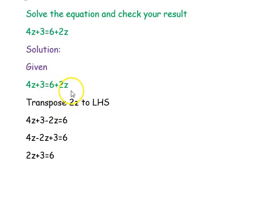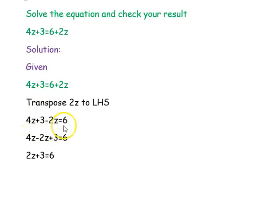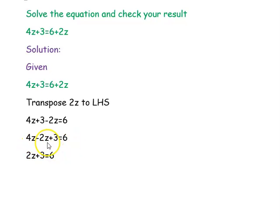The first step, we are going to transpose 2z from the right hand side to the left hand side. It will become minus 2z. So, 4z minus 2z is 2z, and 2z plus 3 equal to 6.